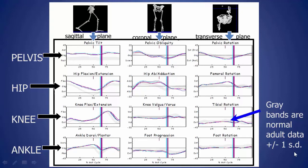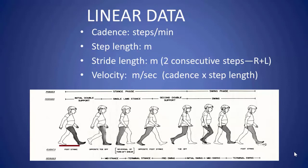The transverse plane is one that you normally cannot see — it's looking down at the patient from the top or up from the floor. It gives you rotation: how the trunk is rotating, how the lower extremities and foot are rotating. The printout has gray bands giving you the normal adult data plus or minus one standard deviation. We also get linear data: cadence in steps per minute, step length — the distance between one foot and the second foot as it lands — stride length — the distance covered by one foot throughout the whole gait cycle, basically two steps — and velocity in meters per second.